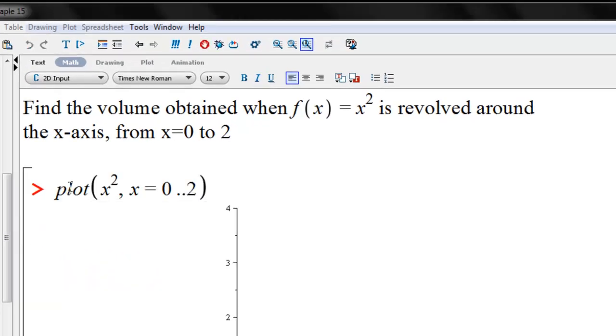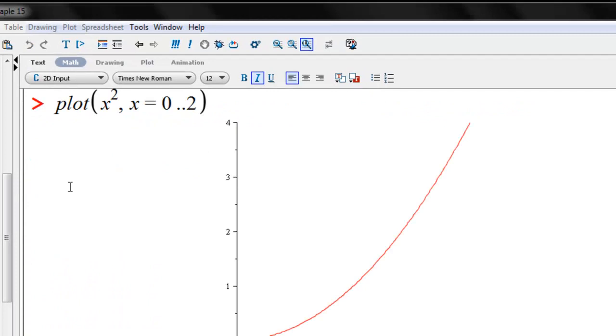So first, let's plot the function. And we see that f of x equals x-squared is the parabola, and we're plotting this as x goes from 0 to 2.